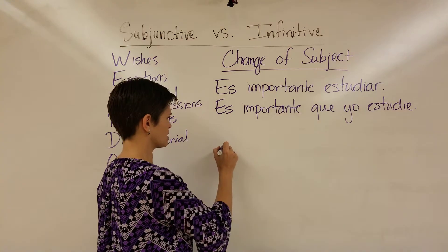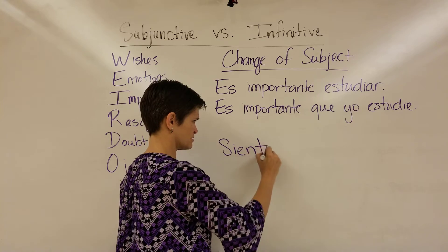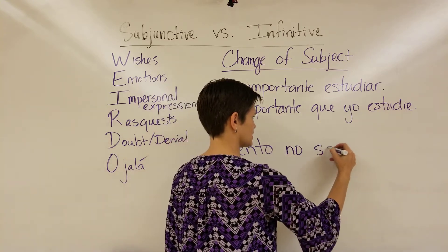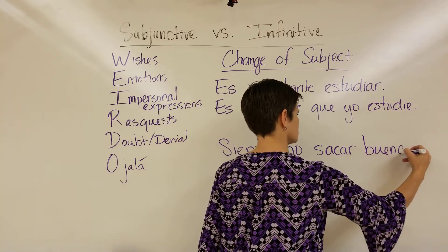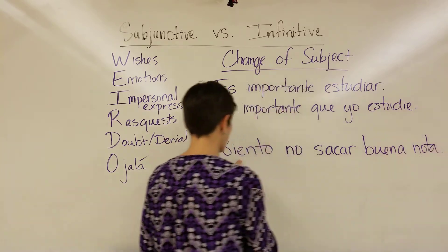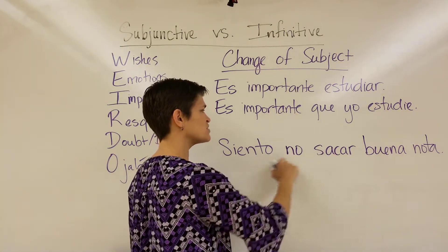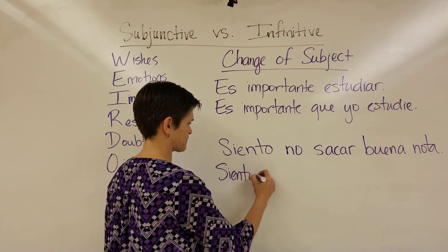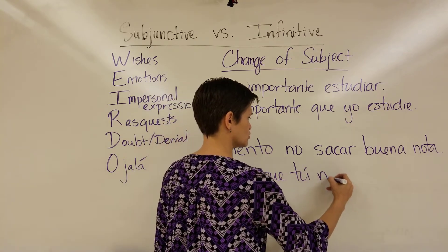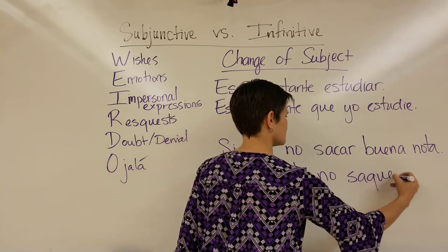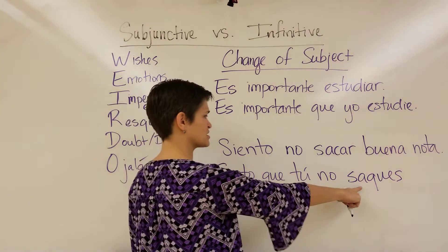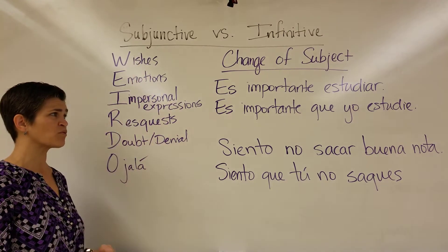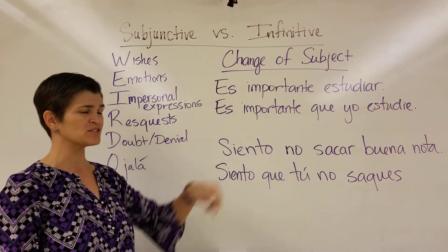One more example: 'yo siento no sacar buena nota' — I'm sorry not to get a good grade. It's me that's sorry and it's me who didn't get it, so we use the infinitive. But if it's 'yo siento que tú no saques buena nota,' now it's in the subjunctive because there's one subject here and a change of subject in the second clause. We use the subjunctive with all these triggers, but only when the subject changes — otherwise, we use the infinitive.